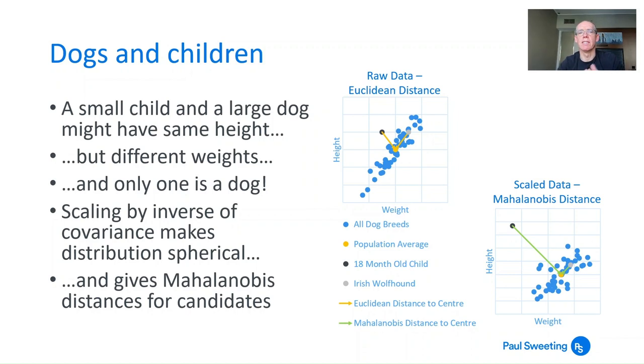One way of looking at this is to consider a hypothetical example. Say you've got a small child and a large dog, and you are trying to see whether each of them belongs to the data set which you have of dogs.